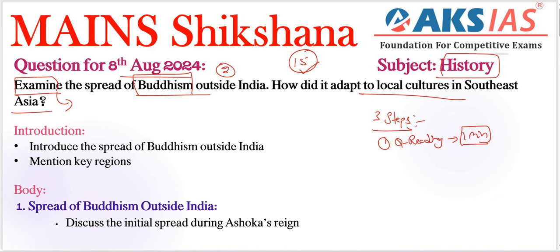The next question tag is 'how' — it simply means we can write things normally, no need to worry. The important keywords here are 'Buddhism outside India' — they are specifically asking outside India — and 'how did it adapt to local cultures in Southeast Asia,' especially Southeast Asia.